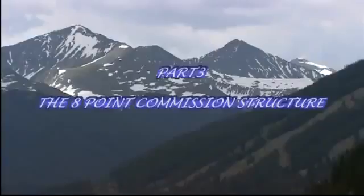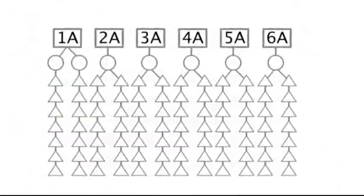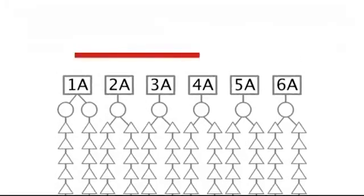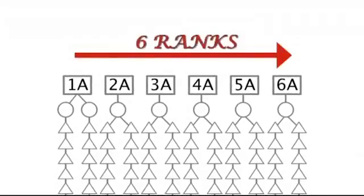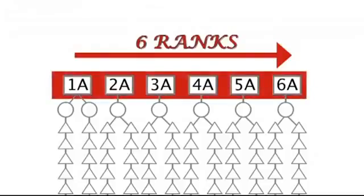Part 3: The 8-point commission structure. This is the basic diagram of our commission structure. At the top, going from left to right, are the ascending ranks of distributors. As mentioned in Part 2, there are six ranks which go horizontally across the top of the diagram.